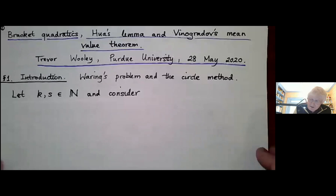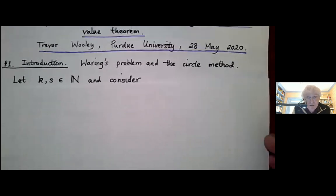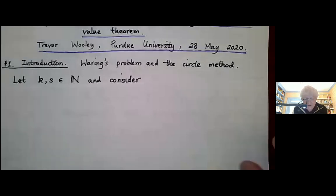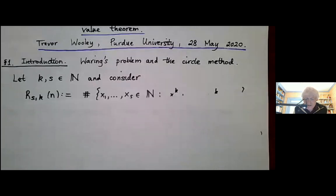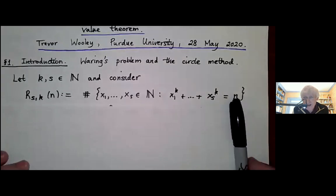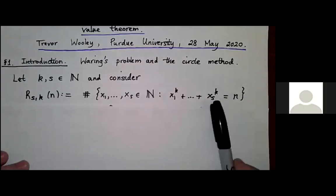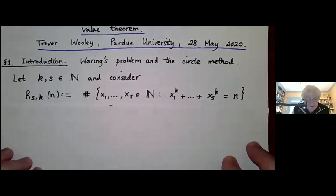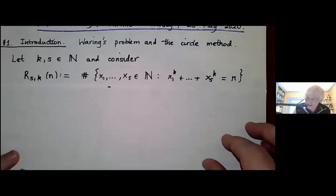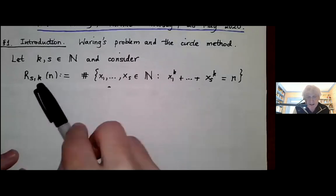What I want to do is talk about a topic which began life for me about 10 years ago. So first of all, with some background, I want to think about Waring's problem. Waring's problem is to consider representations of a positive integer n as a sum of s-th powers of natural numbers. In particular, I'm interested in the number of representations of an integer n as a sum of s-th powers, which I'll call R_{s,k}(n).